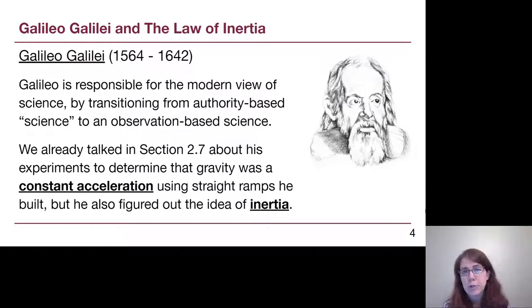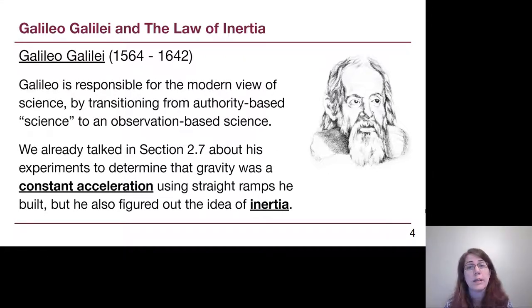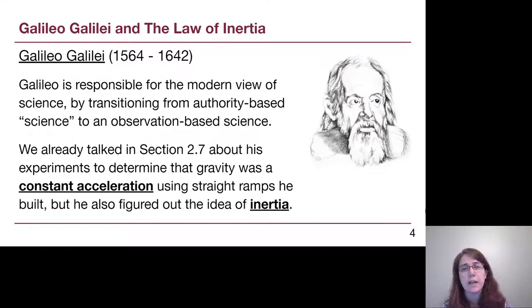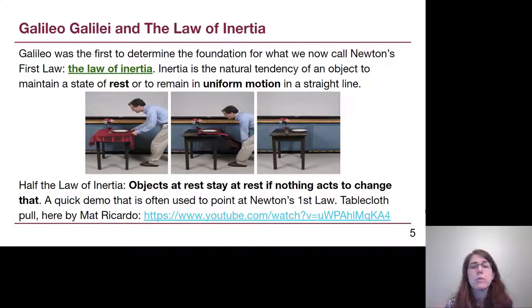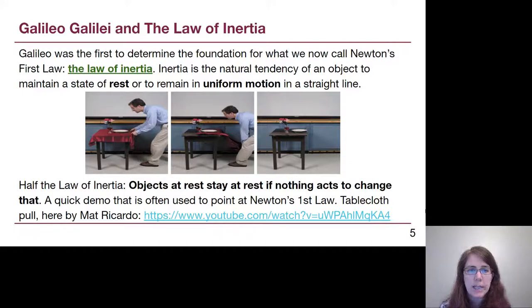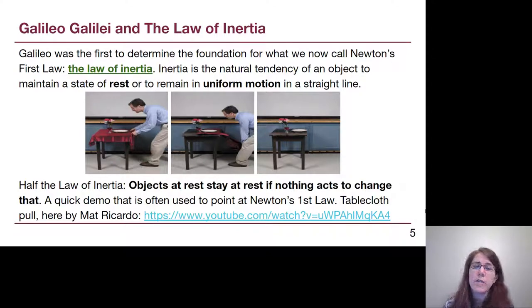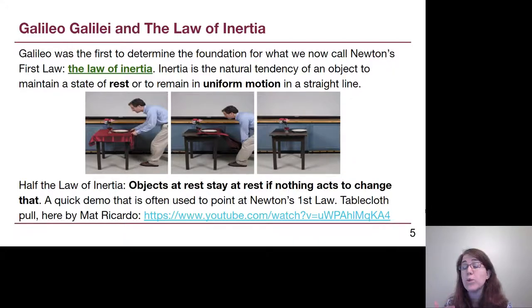In Chapter 2.7 we talked about Galileo's ability to build an experiment in his workshop that showed that things fall at constant acceleration. He also built some ramps to help him think about the idea of inertia. He was the first to determine what we now think of as Newton's first law, and we will get the official wording for Newton's first law in a couple of slides.